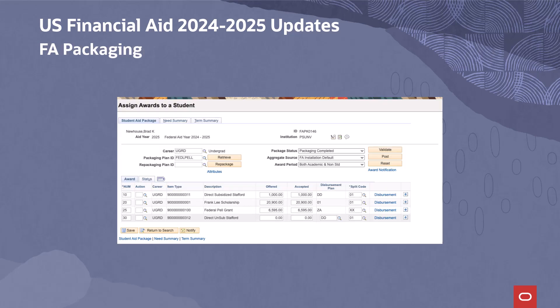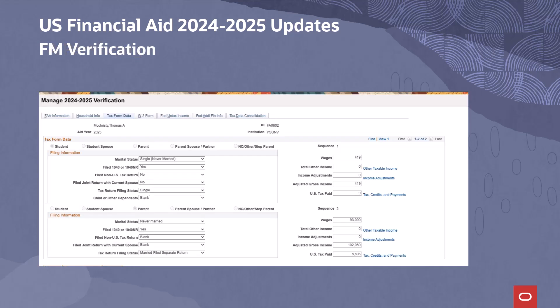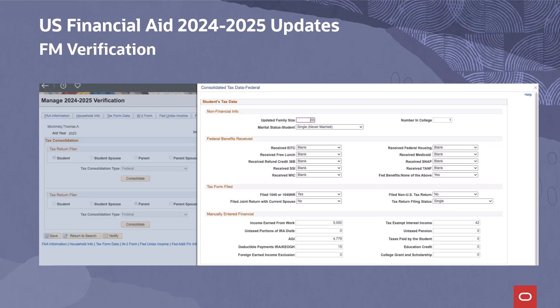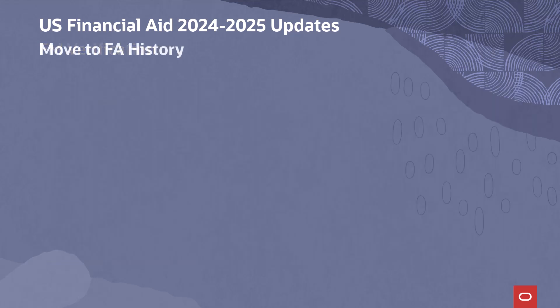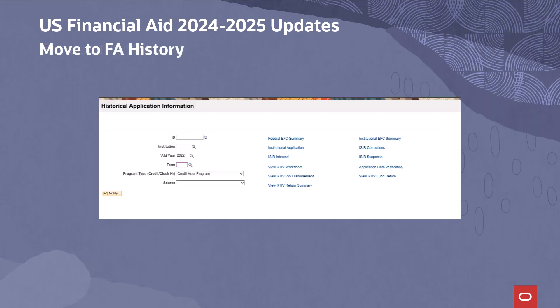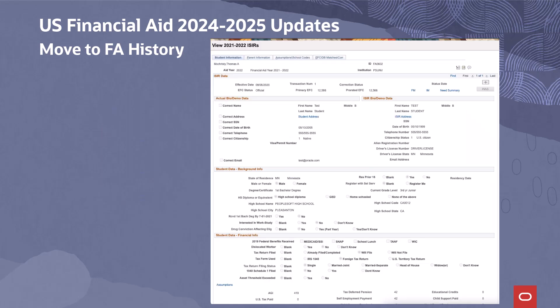We have made updates to FA packaging logic related to awarding Federal aid in award year 2024-2025, involving awarding of Pell and awarding with a negative SAI value. We delivered the update for FM verification for award year 2024-2025. We have delivered our annual move to FA history for award year 2021-2022, which includes ISA, profile, FM-IM EFC summaries, and verification.